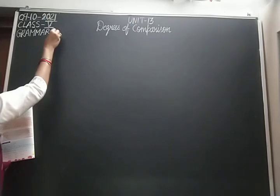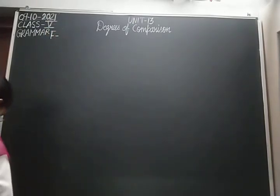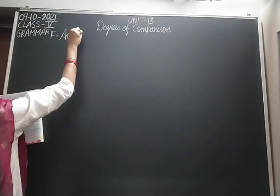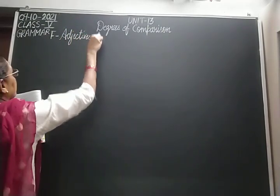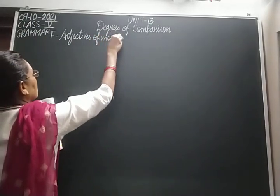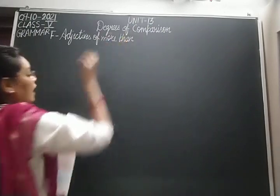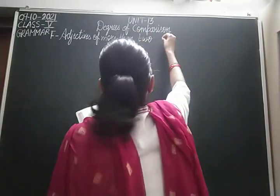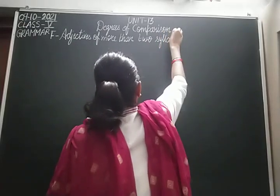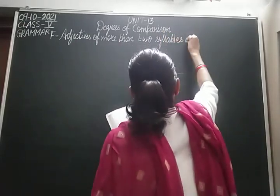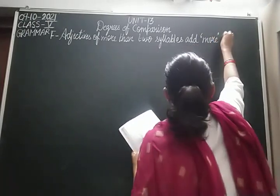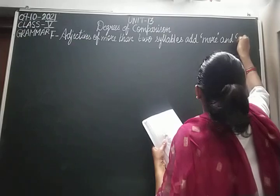Rule F says: adjectives of more than two syllables add MORE and MOST before them to form the comparative and superlative degrees respectively.